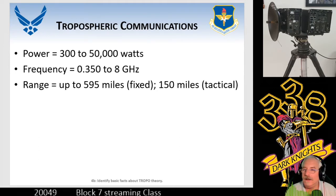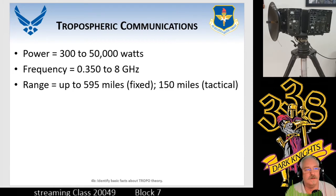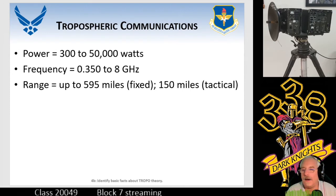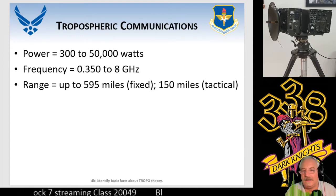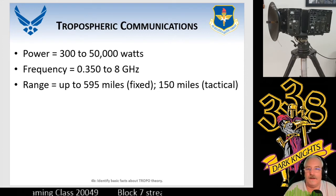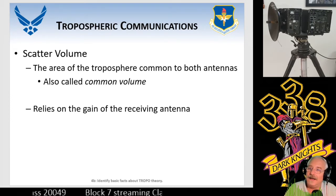When we look at TROPO, we're looking at 300 to 50,000 watts. Power for TROPO — normally it's around 300 watts for tactical because you don't want to create yourself as a target, so you keep it low, which means you'll go less far than a fixed site which could transmit at 50,000 watts. Technology has gotten better. The frequency range is about 350 MHz to 8 GHz, depending on which scientific website you go to.